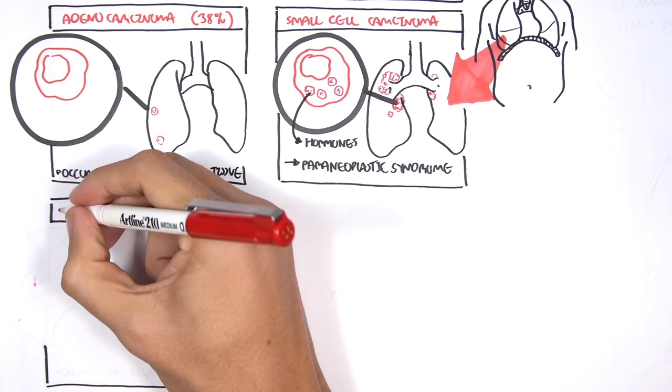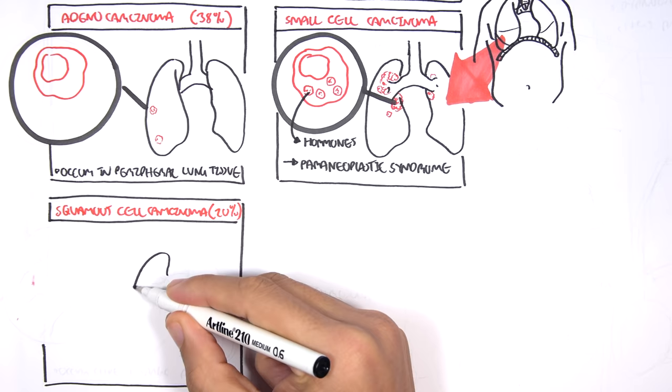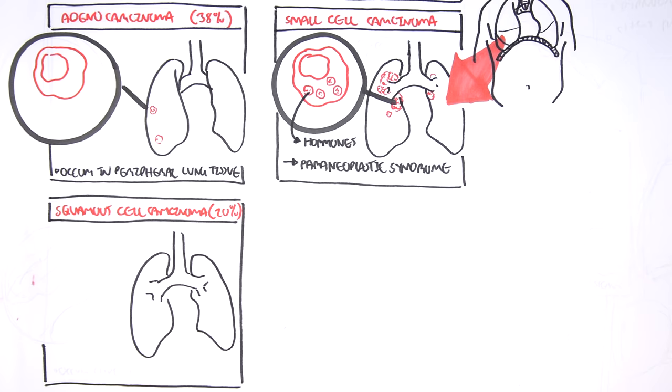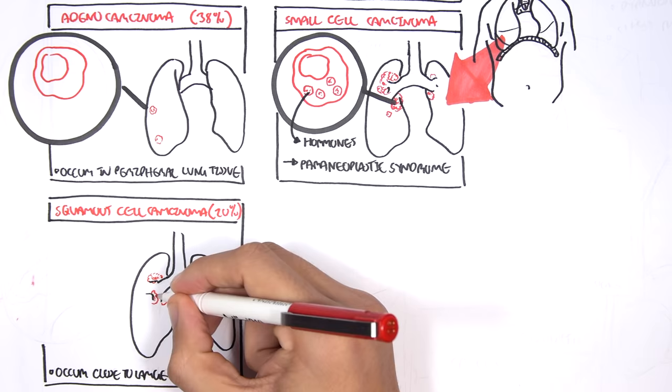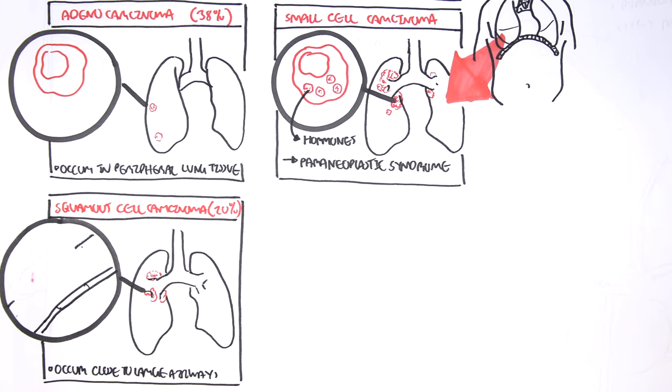Squamous cell carcinoma is the other type of non-small cell carcinoma and makes up about 20% of lung carcinoma cases, making it the second most prevalent type of lung carcinoma. These types of cancer tend to occur close to the main bronchus and can cause obstruction of the airways. They are called squamous because the epithelial cells that line the airway become mutated and change from columnar, cuboidal to squamous, and essentially dysplasia cancer.